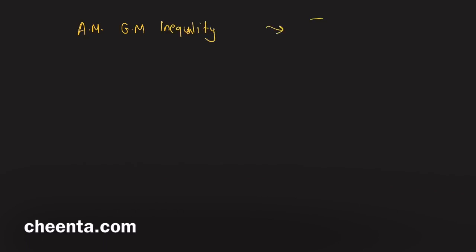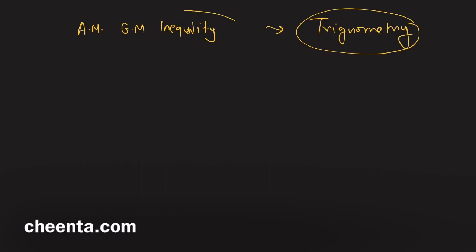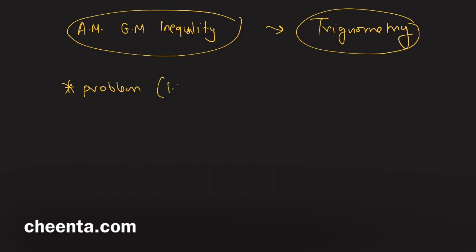We will learn two concepts today: the AM-GM inequality and its relation with trigonometry. A very beautiful problem will be used to understand these concepts, and it's from the ISI entrance exam.